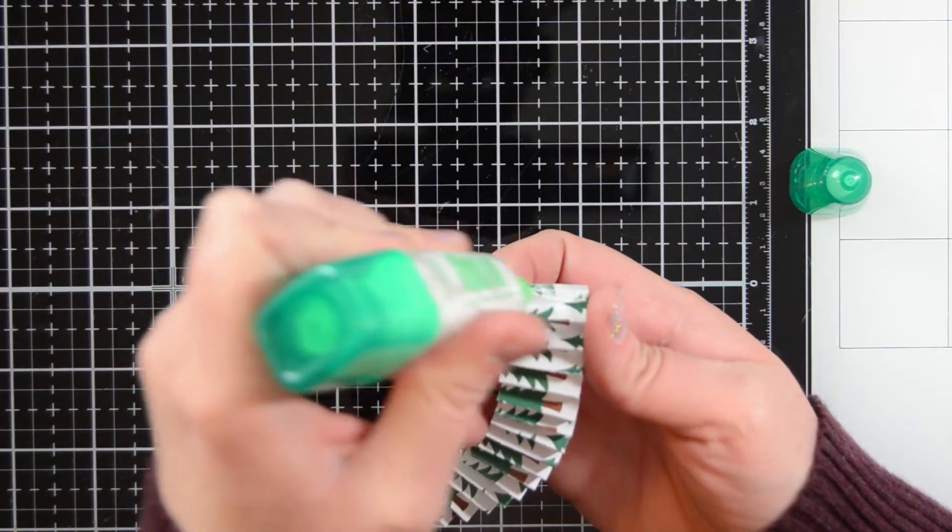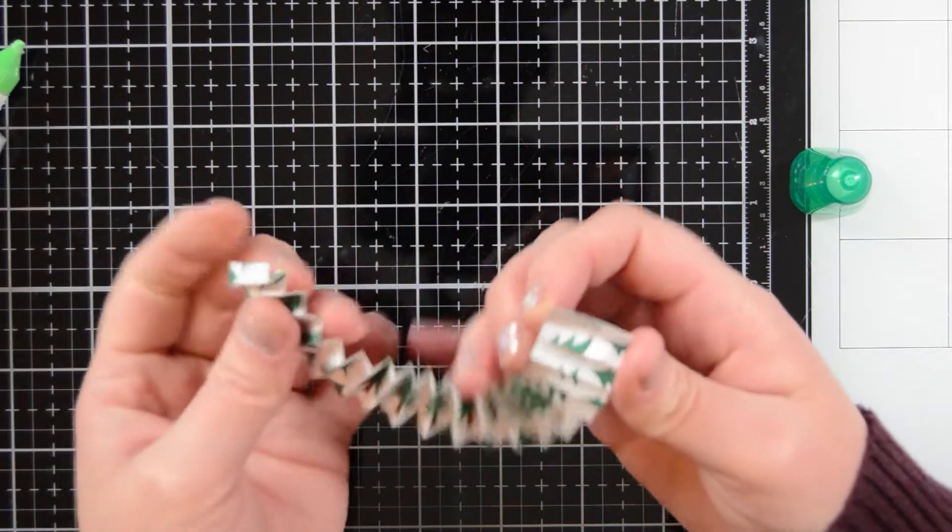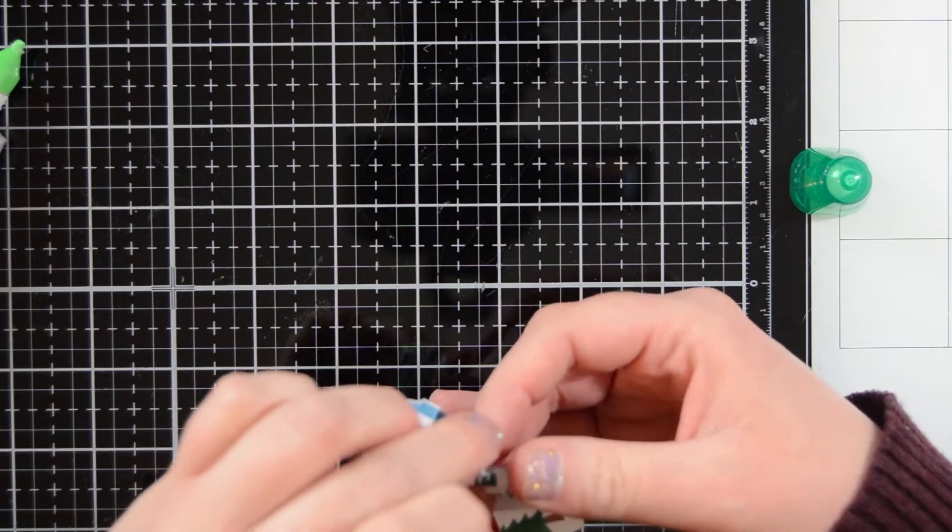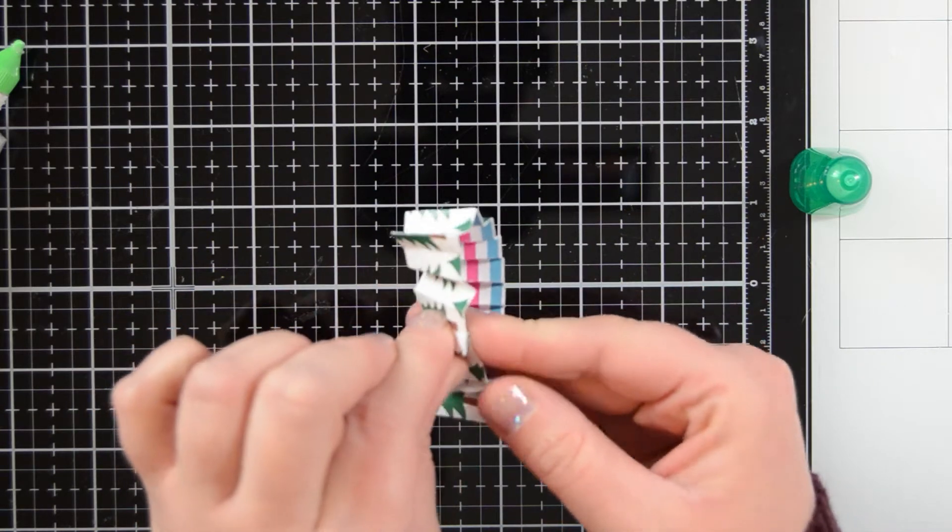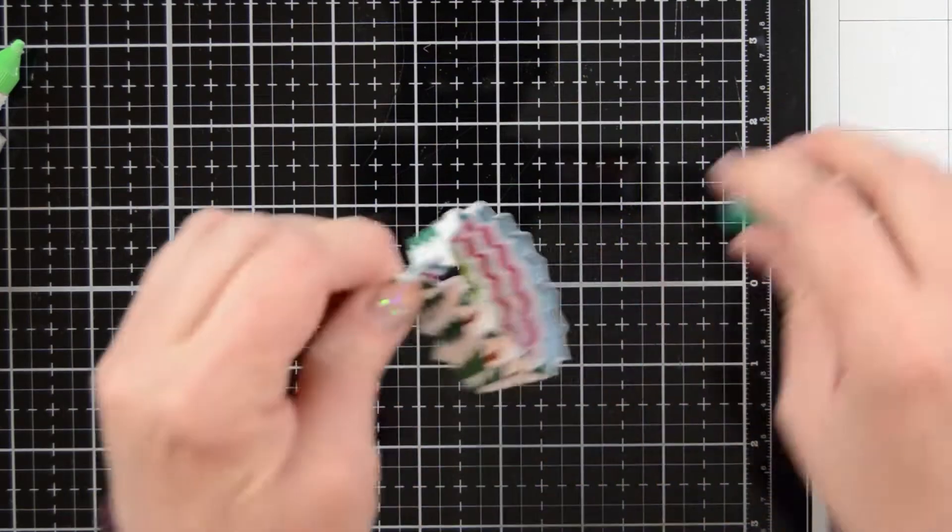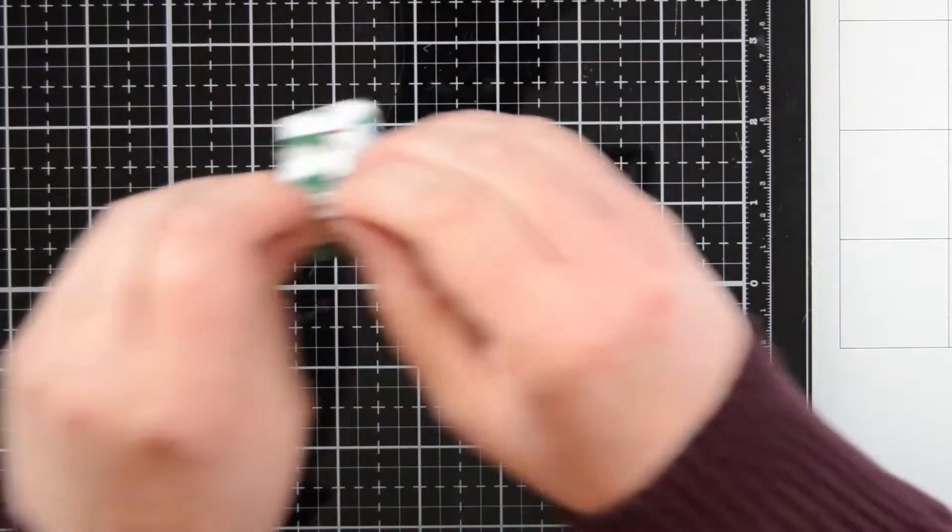So then what you want to do is just take one of the little folded edges of it and put some glue on and attach that to the other side. It will look seamless. You won't notice that. I just like to hold it for a little bit to make sure that it's nice and tight. And this glue is pretty good. It holds really well. It held all of these.